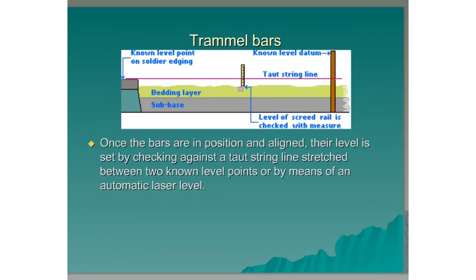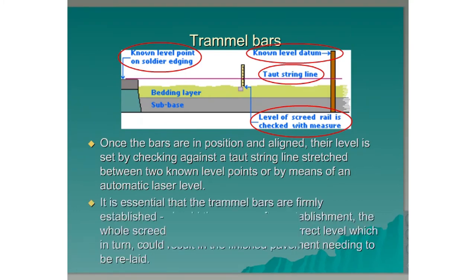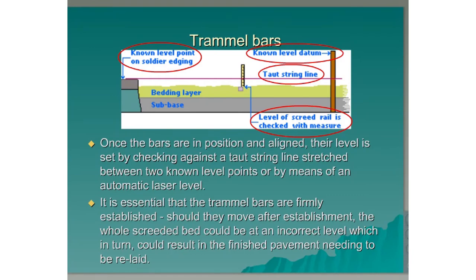Once the bars are in position and aligned, their level is checked. This is done by checking against a taut string line, which is stretched between two known level points, or by means of an automatic laser level. It is essential that the trammel bars are firmly established. Should they move after establishment, the whole screeded bed could be at an incorrect level, which in turn could result in the finished pavement needing to be re-laid.